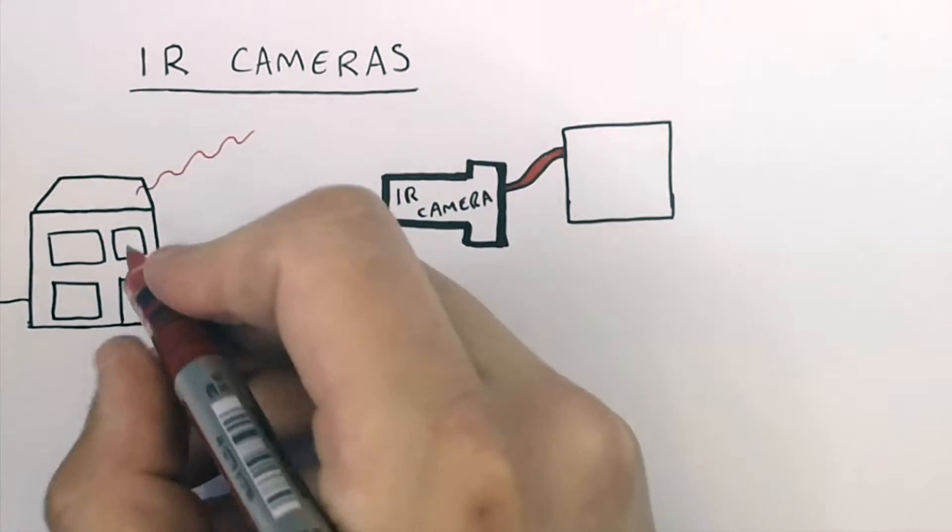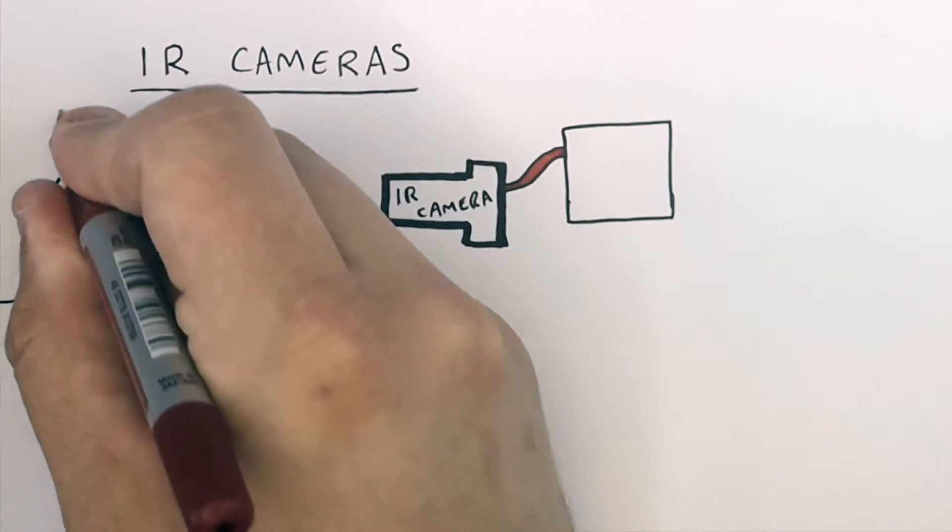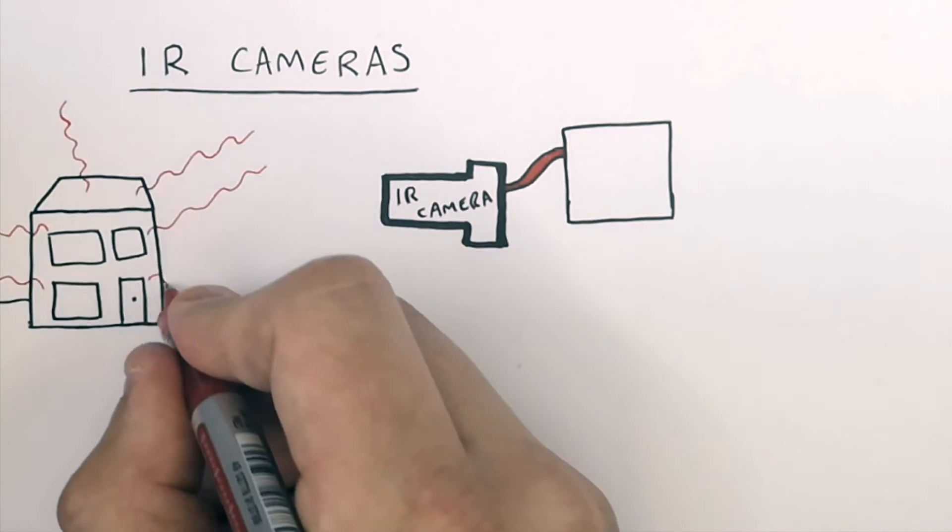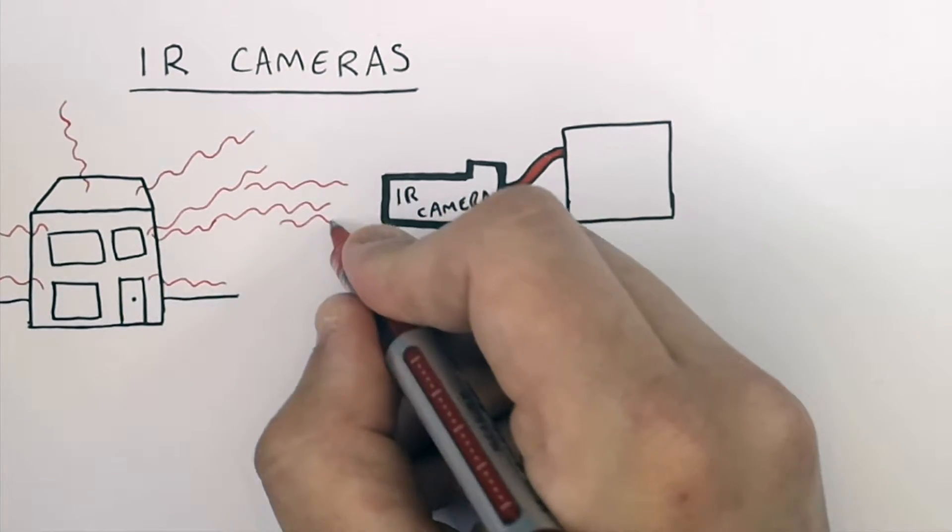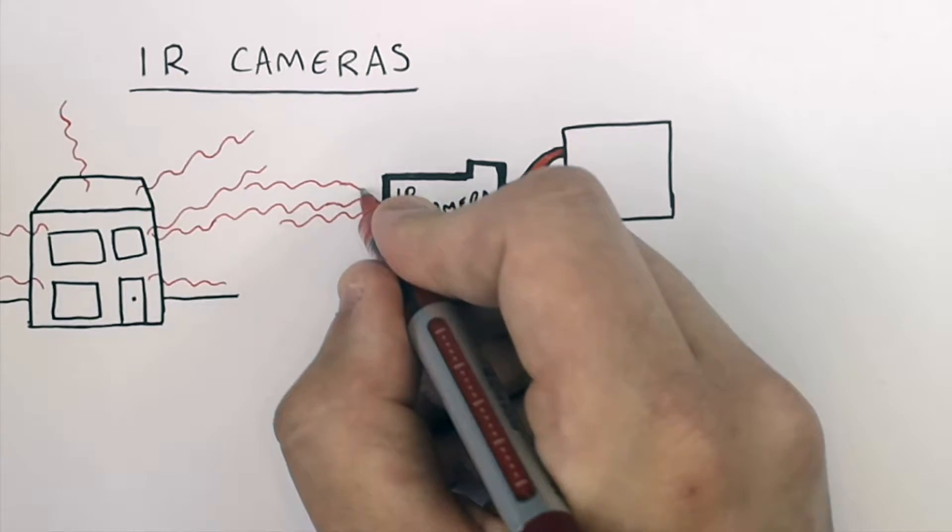A house is going to be emitting infrared radiation from the thermal energy stores that are in the house. An infrared camera is going to detect the different levels of infrared radiation.